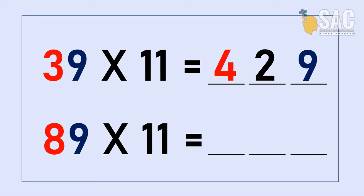Next one is 89 times by 11. Front number is 8, last one is 9. Since the middle number is 17, we plus 1 to 8, then the middle one will be 7. So the answer will be 979. Easy!